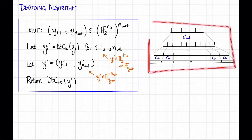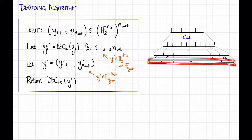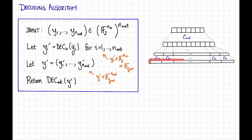So here's a little cartoon of a concatenated code. We have our original message, which we encode with the outer code C_out. Then we treat each symbol of that codeword, which is a symbol over some big alphabet, as a little binary vector, and encode each of those binary vectors with the inner code C_in to get bigger binary vectors. This whole big binary codeword that results is our encoding under the concatenated code.